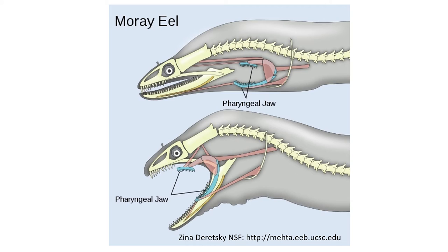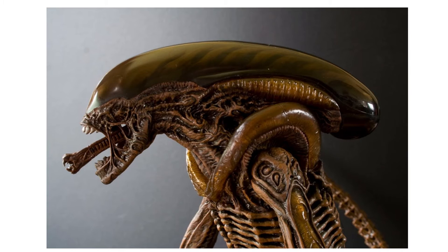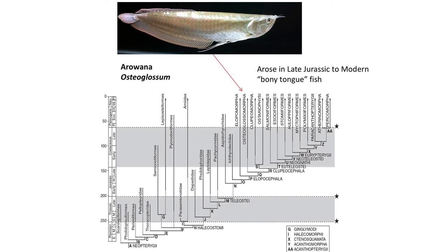This scary pharyngeal jaw inspired the alien in the Alien movies. The Osteoglossomorpha, or bony tongues, feature teeth on their tongues which provide another bite inside the mouth. The most well-known Osteoglossomorpha is the Arowana, genus Osteoglossum, which you can find in pet stores and at local aquariums.